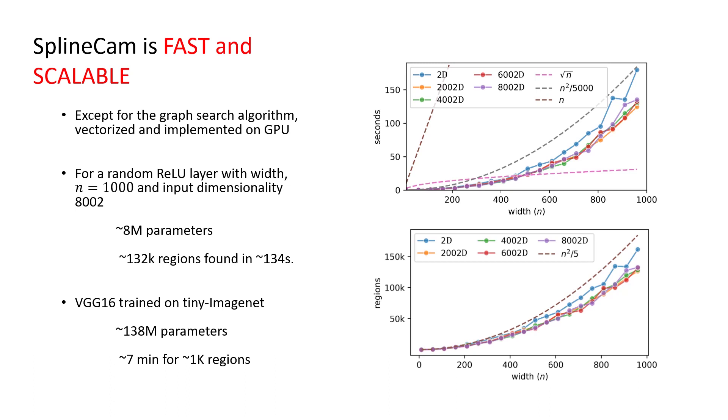For large deep networks like VGG16, SplineCam approximately needs 7 minutes to find 1000 regions.